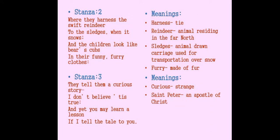Stanza 2: 'Where they harness the swift reindeer to the sledges when it snows, and the children look like bear's cubs in their funny furry clothes.' This means the northern region experiences severe cold conditions. The reindeer, an animal found in this polar region, is tied to sledges which the reindeer then pull. The children look like young bear cubs because they wear funny-looking clothes made of fur, similar to the furry skin of a bear.